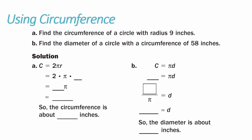Example 1A, using circumference: find the circumference of a circle with radius 9 inches. All you have to do is plug in your radius of 9 inches into the formula for circumference, which is 2 pi R, and then evaluate. 2 times 9 is 18 times pi, which gives you approximately 56.55, so the circumference is about 56.55 inches.